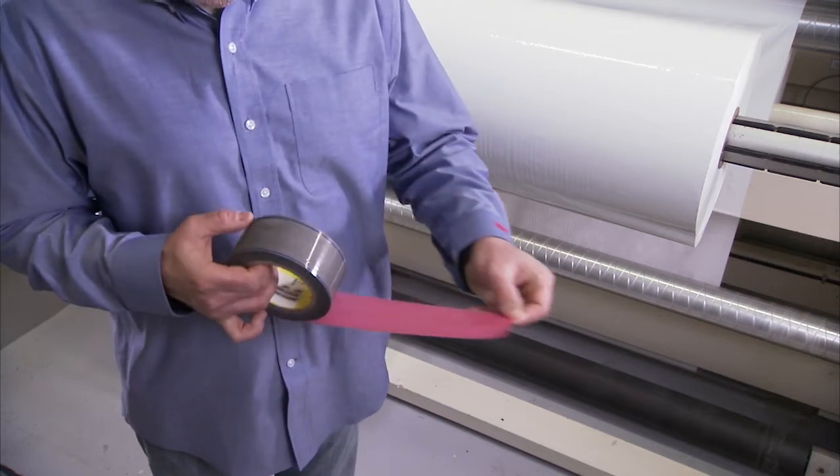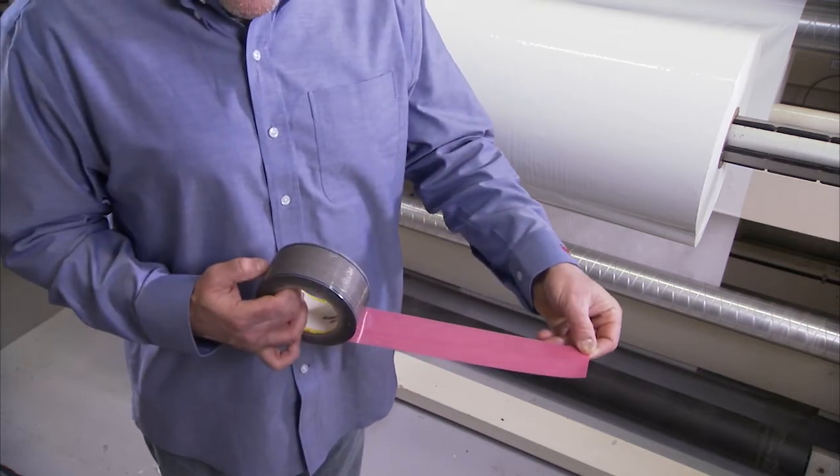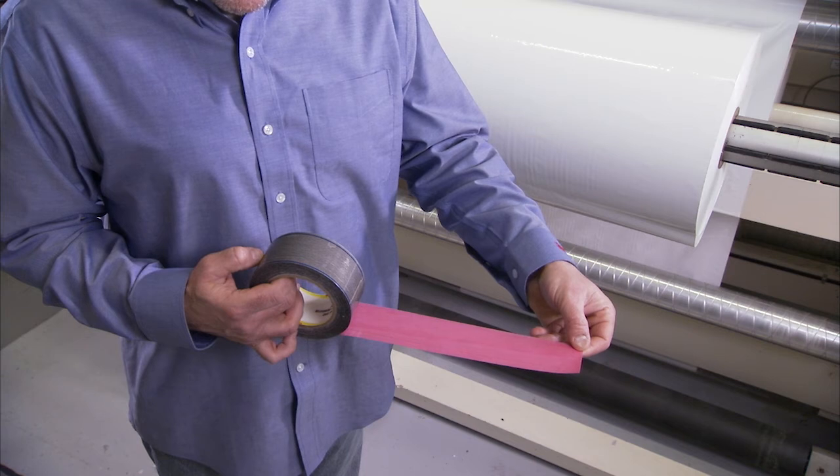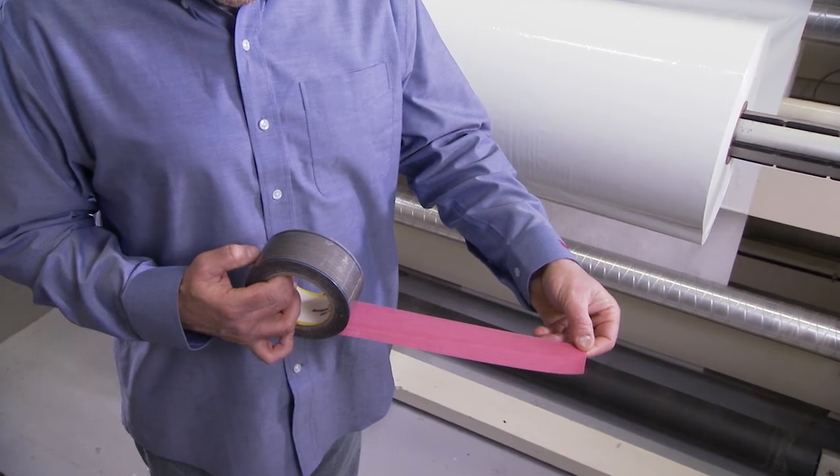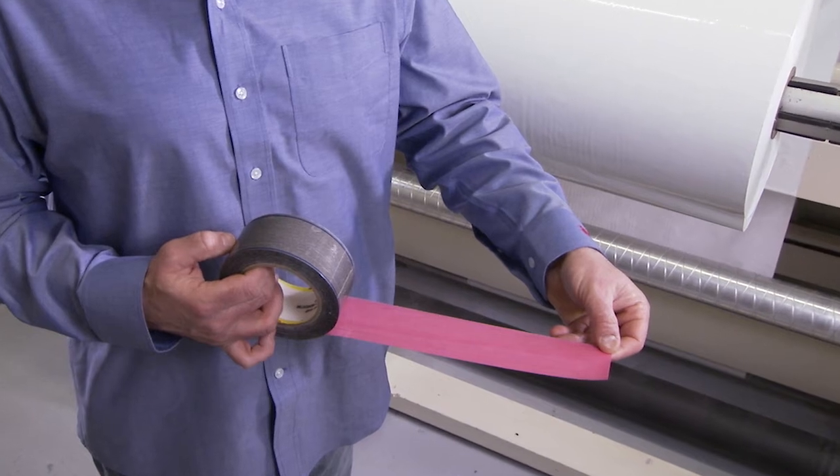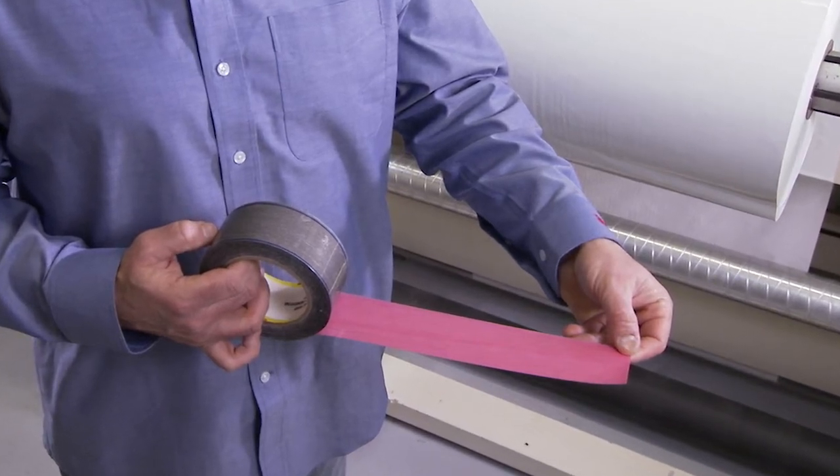On occasion, a roll of 3M splittable flying splice tape may become pre-separated. Pre-separated means that the two layers of the tape have come apart while you were handling them. This could happen if you try to open the tape by picking at the corner instead of from the center.